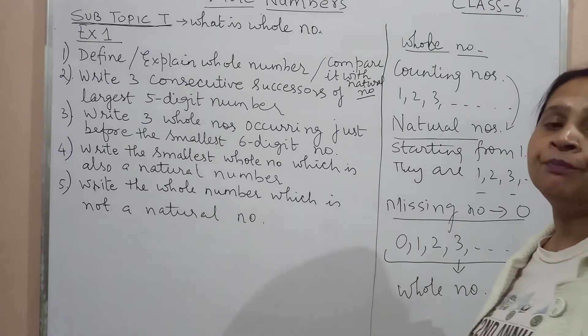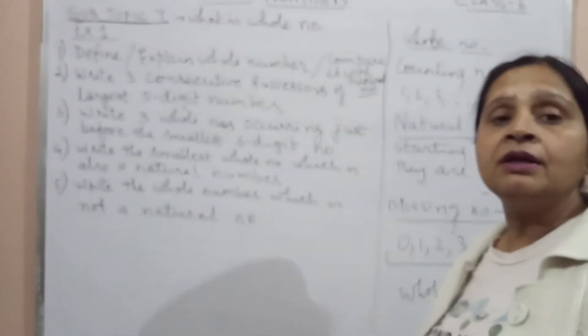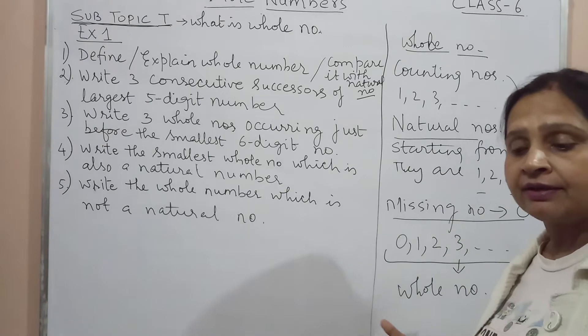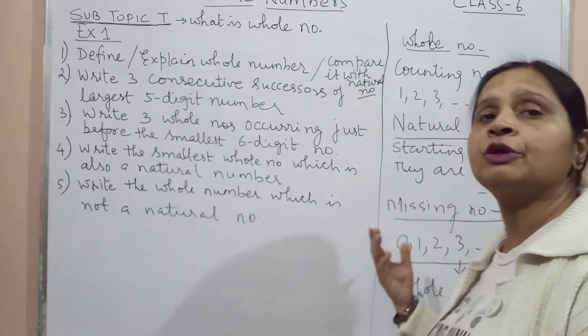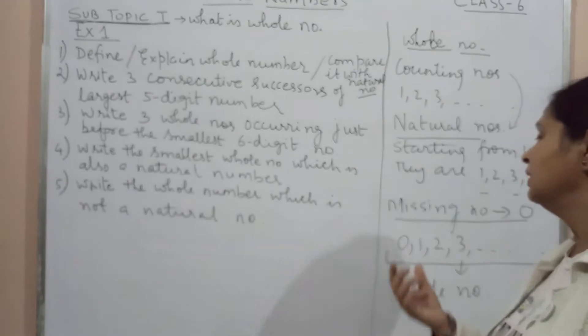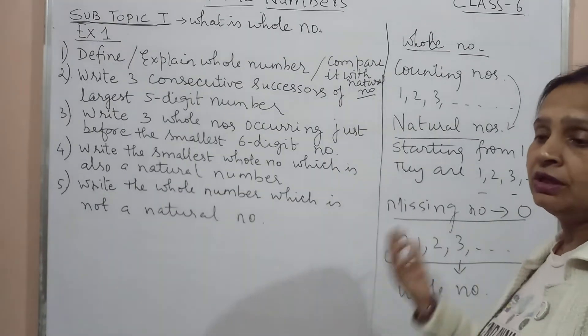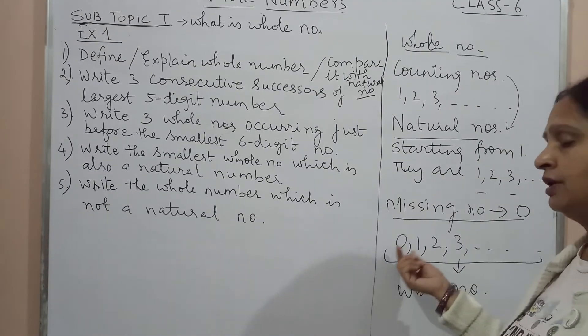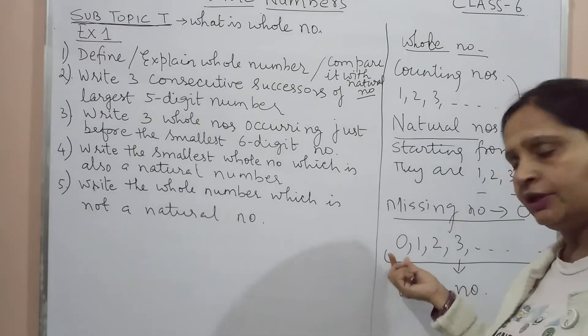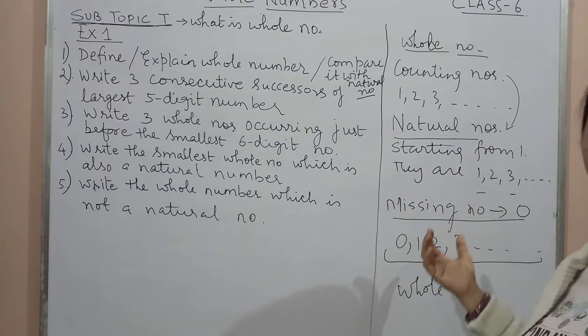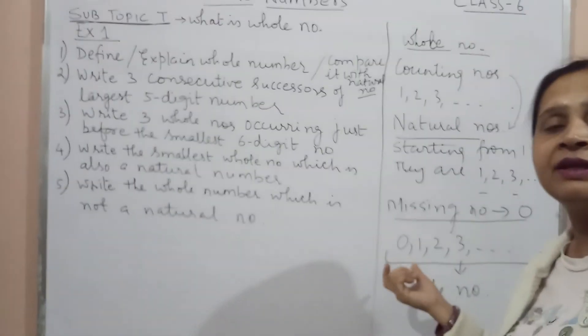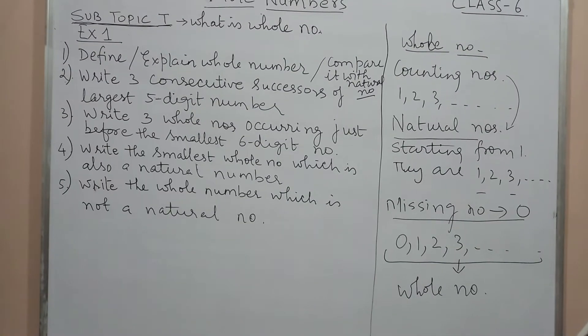Abhi tak hamare paas one, two, three, four ke list thi. Lekin jab samay aaya then we felt ki there is a need, jab hamare paas empty or nothing ke liye bhi humne kuch na kuch define karna padega, then we introduced one more number in that and that was zero. Aur isko hamne natural number bola, aur jab hamne us natural number mein zero ko bhi add kar diya, it became a whole number. So set of whole numbers.